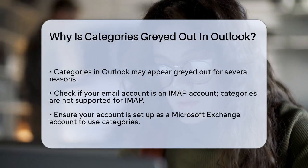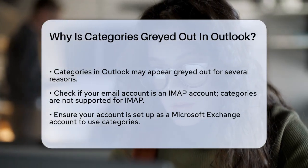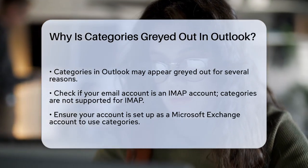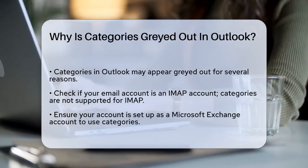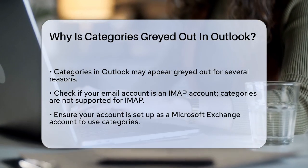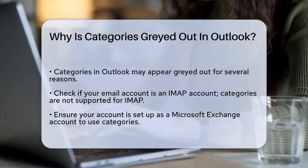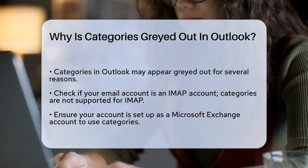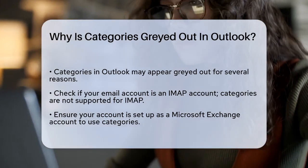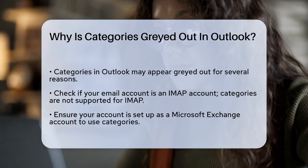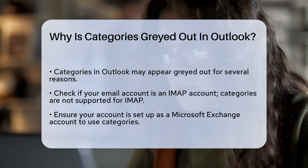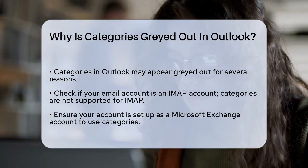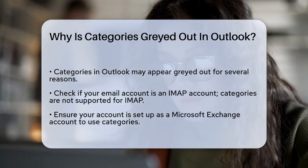First, it's important to check the type of email account you're using. Categories are not supported in IMAP accounts. If your email account is set up as an IMAP account, you won't be able to use categories. You need to ensure that your account is configured as a Microsoft Exchange account.